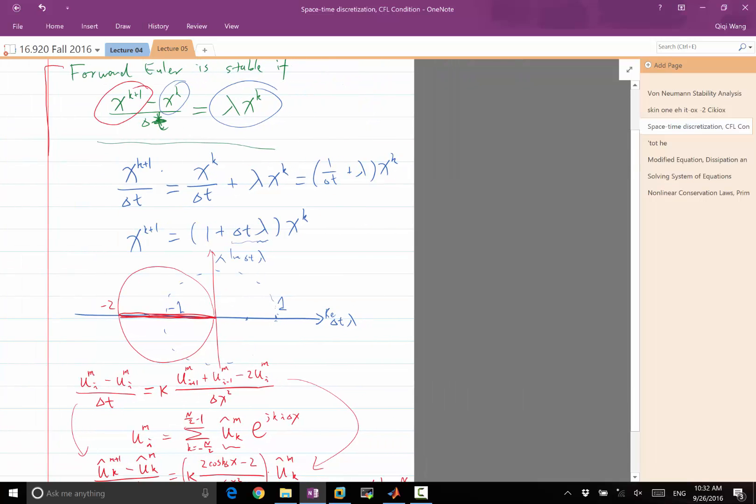Forward Euler analysis separate. Let's draw a box: this is x of t, not space. k is the time step, not space.